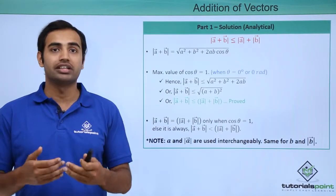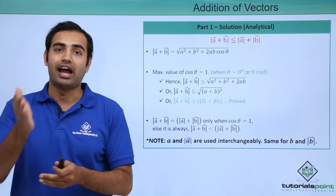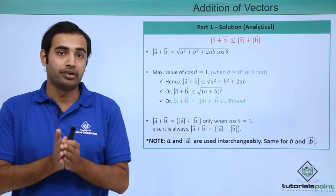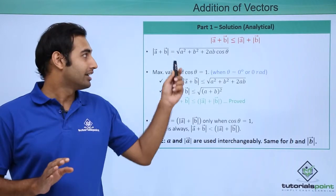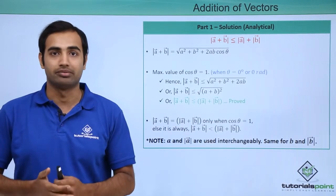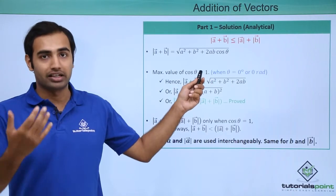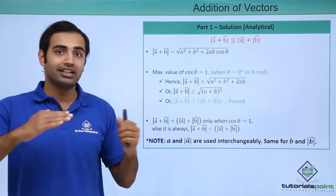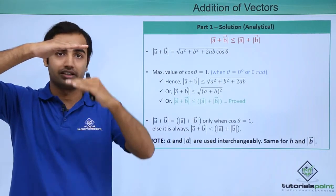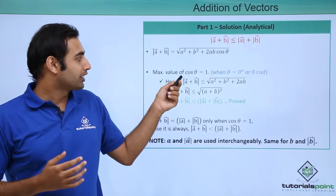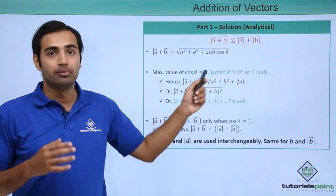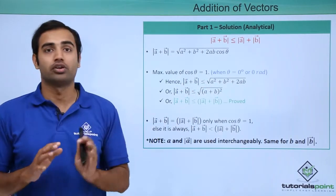The value of cos theta is maximum when cos theta equals 1, which occurs when angle theta equals 0 radians. If A and B are unchanging quantities, this entire expression will be maximum when cos theta is maximum, and minimum when cos theta is minimum. Because cos theta equals 1 is the maximum value, the maximum possible value of modulus of A plus B occurs when I substitute cos theta as 1, giving A squared plus B squared plus 2AB.